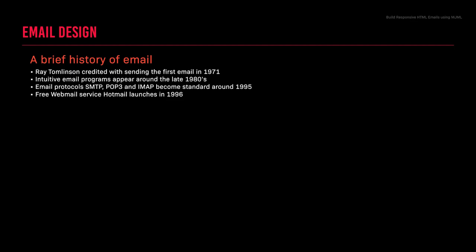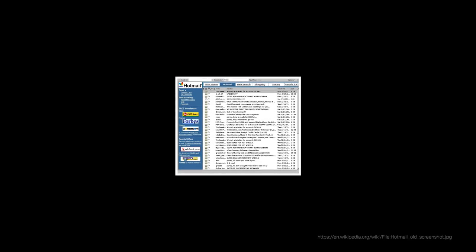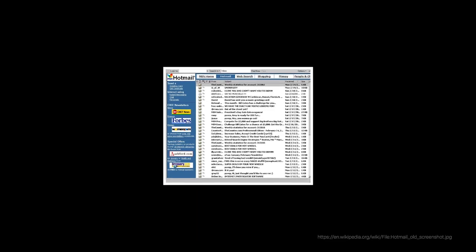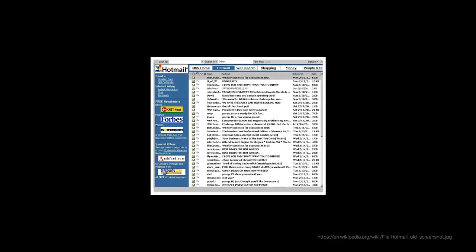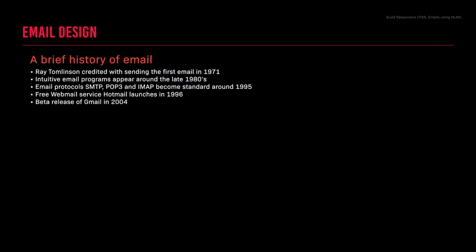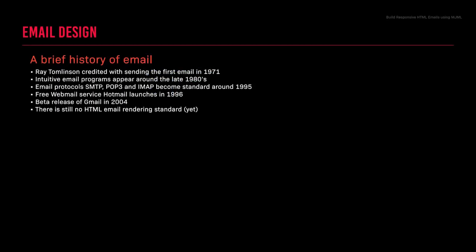In 1996, a free webmail service called Hotmail launched, giving anyone the ability to own an email address and view email in a web browser, which gave rise to HTML email. And in 2004, Gmail was released. As there are no HTML email standards and all email clients render HTML email differently, using a tool like MJML is helpful.